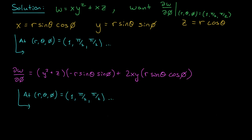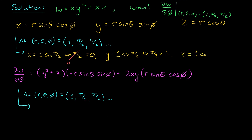So rather than substituting those bulky expressions for x, y, and z, why don't we first figure out what x, y, and z are when r, theta, phi equals 1, pi over 2, pi over 2. When we plug in: x equals 1 times sine pi over 2 times cos pi over 2, and since cos pi over 2 is 0, x is simply 0. y equals 1 times sine pi over 2 times sine pi over 2, which is 1. And z equals 1 times cos pi over 2, which is 0.